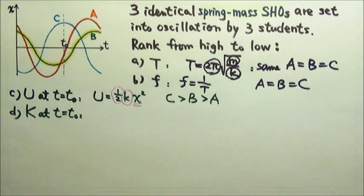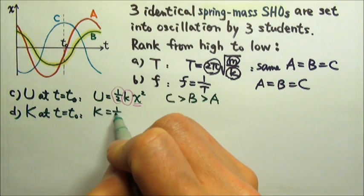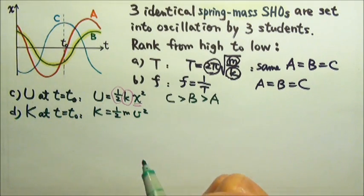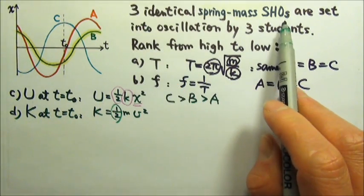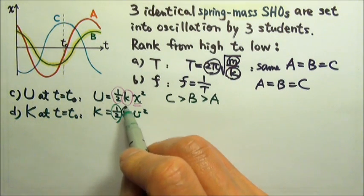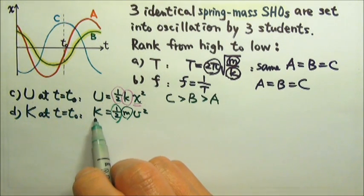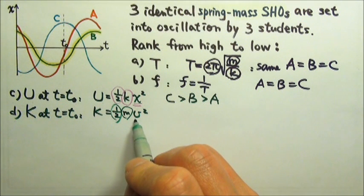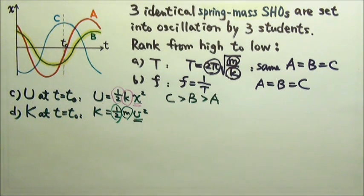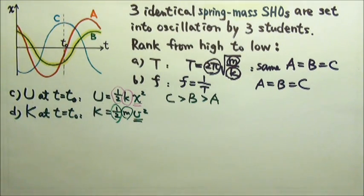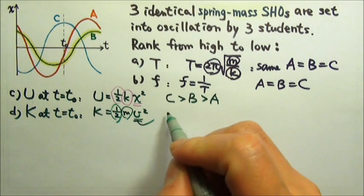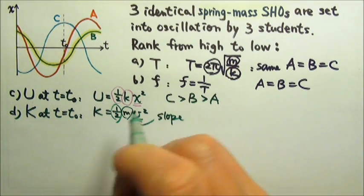To compare K, we can think about how we would find K. Kinetic energy is ½mv². ½ is a constant, and for the identical oscillators, they all have the same mass. So to compare the kinetic energy, we just have to compare the velocity. How do we get information about velocity if we are given a position versus time graph? It's the slope of the graph.